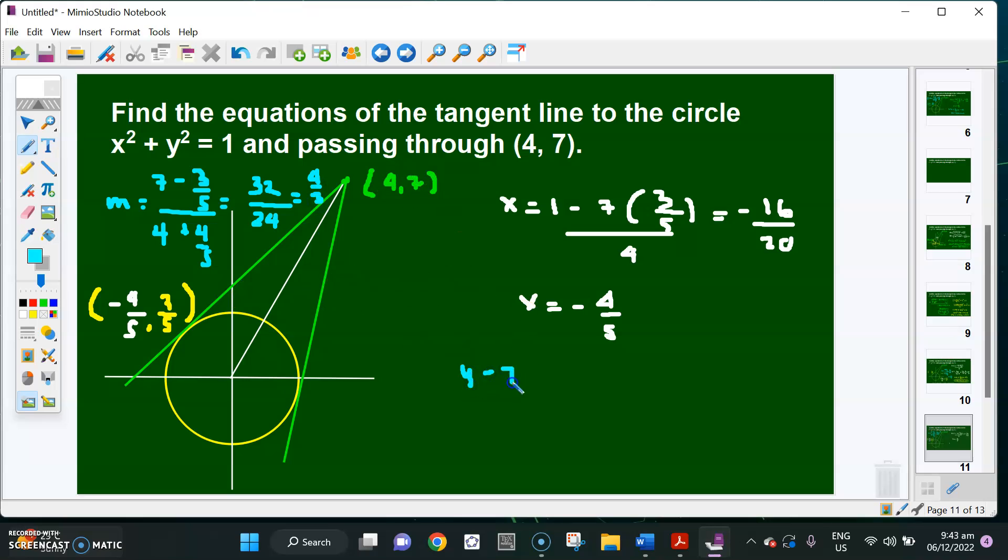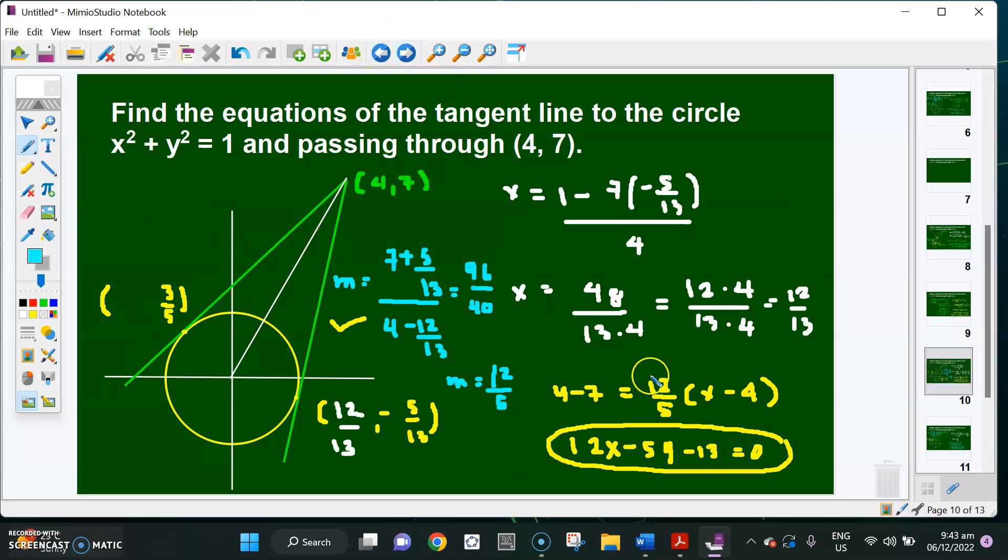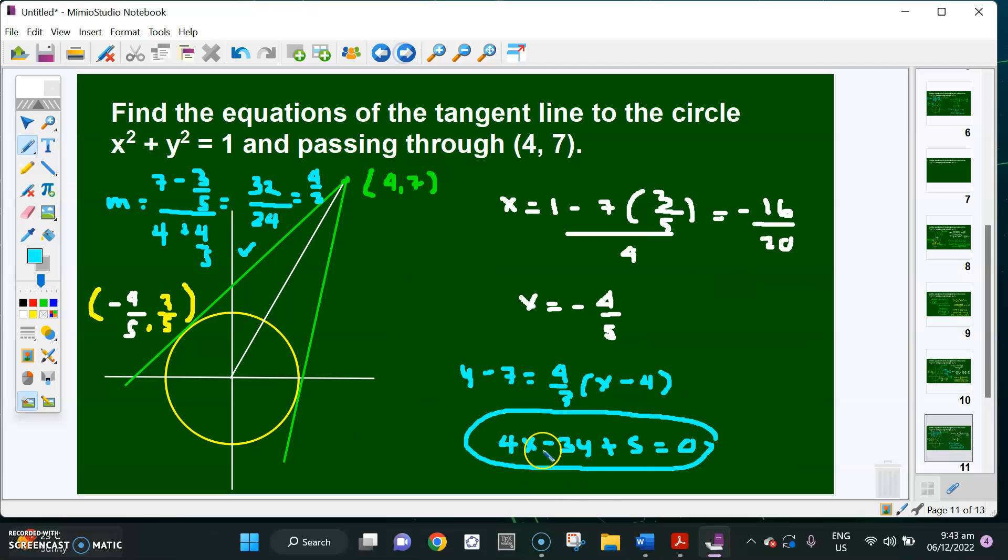So y minus 7 equals the slope 4/3 times (x minus 4). Simplifying this one, I'm going to have 4x minus 3y plus 5 equals 0. So this is the second equation of the tangent lines that we're looking for. These are the two answers.